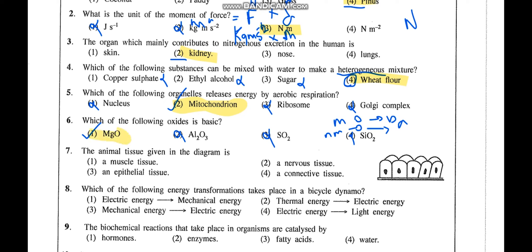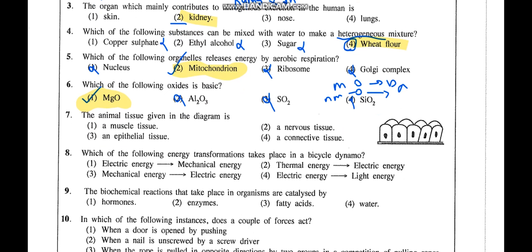Always remember: metallic oxides are basic, non-metallic oxides are acidic — this is in your Grade 10 third unit. Question 7: The animal tissue given in the diagram. We have nervous tissue, muscle tissue, epithelial tissue, and connective tissue. The tissue shown is placed on a basement membrane with tightly packed cells and a central nucleus — these are features of epithelial tissue. The answer is epithelial tissue.